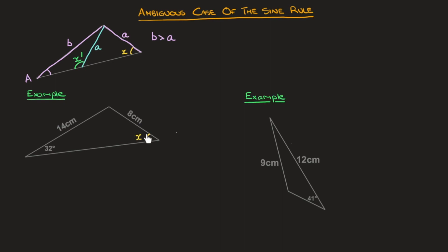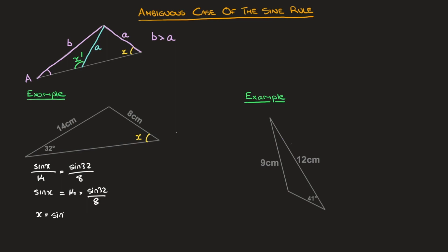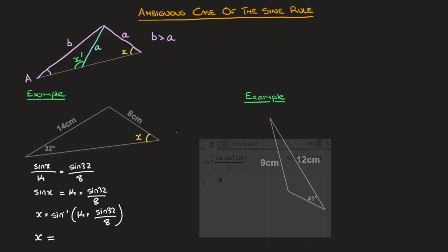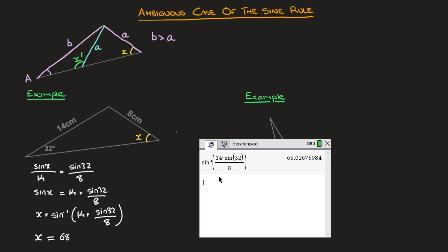There will therefore be two possible values for this angle — one acute and one obtuse. Using the sine rule, we state that sine of x over 14 equals sine of 32 over 8. Multiplying both sides by 14 gives sine of x equals 14 times sine of 32 over 8. Applying inverse sine to both sides gives x equals inverse sine of 14 times sine of 32 over 8, which rounds to 68.0 degrees.